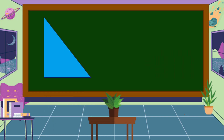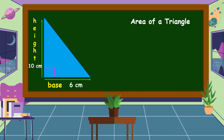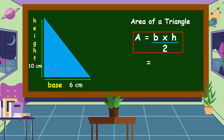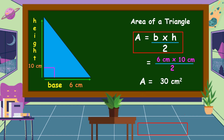Do you know what plane figure is this? This is a triangle with a base of 6 centimeters and a height of 10 centimeters. Calculate the area of this triangle. The formula for finding the area of a triangle is area equals base times height divided by 2. Our base is 6 centimeters and the height is 10 centimeters. 6 centimeters times 10 centimeters equals 60 centimeters squared, divided by 2. The area is equal to 30 centimeters squared.